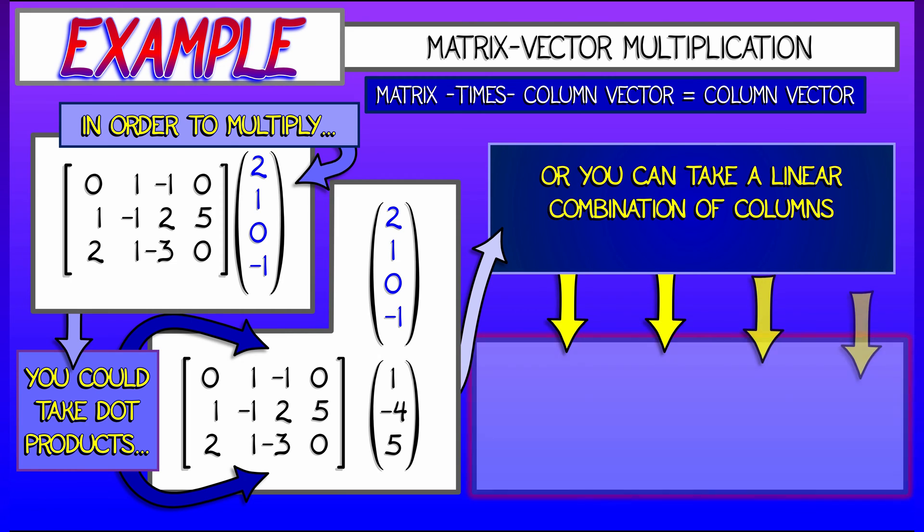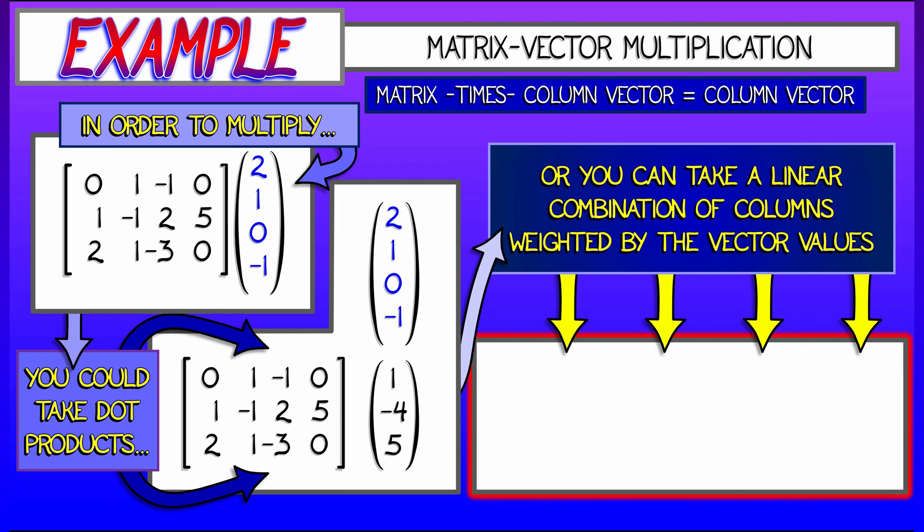However, there's another way to do it, and this way can be very helpful. You can take a linear combination of the columns weighted by the vector values, in this case, 2 times the first column, plus 1 times the second column, plus 0 times the third column, plus negative 1 times the fourth column.